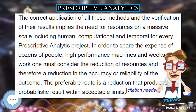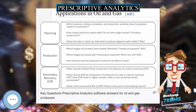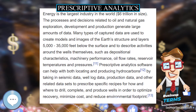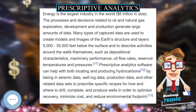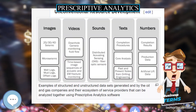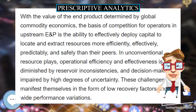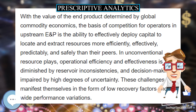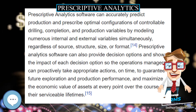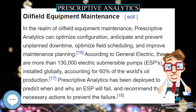The data inputs to prescriptive analytics may come from multiple sources — internal, such as inside a corporation, and external, also known as environmental data. The data may be structured, which includes numbers and categories, as well as unstructured data such as texts, images, sounds, and videos. Unstructured data differs from structured data in that its format varies widely and cannot be stored in traditional relational databases without significant effort at data transformation.